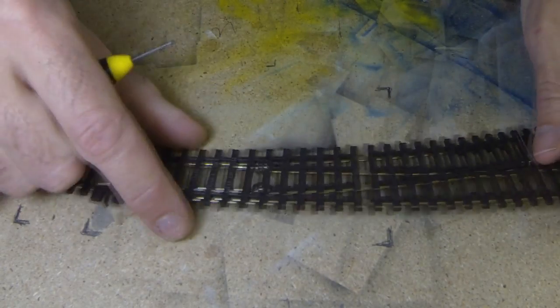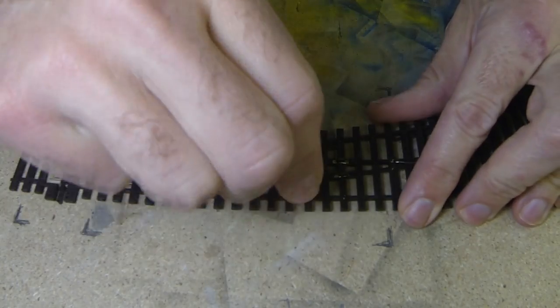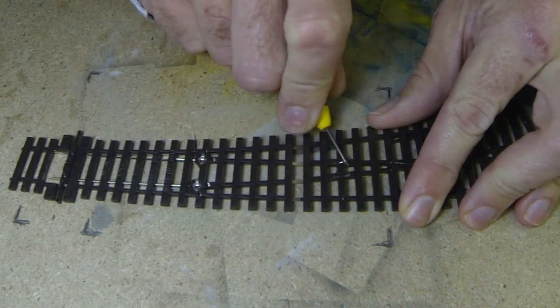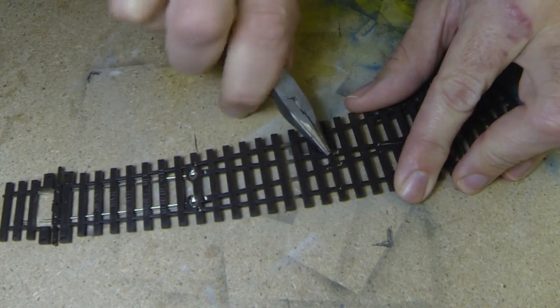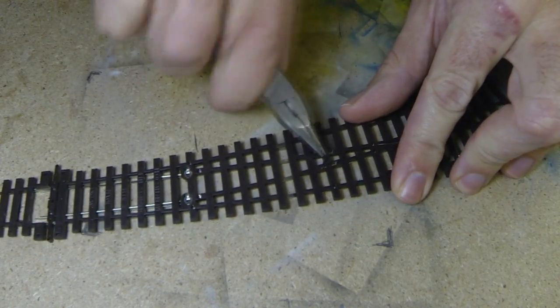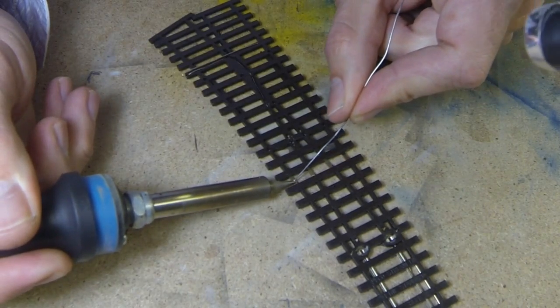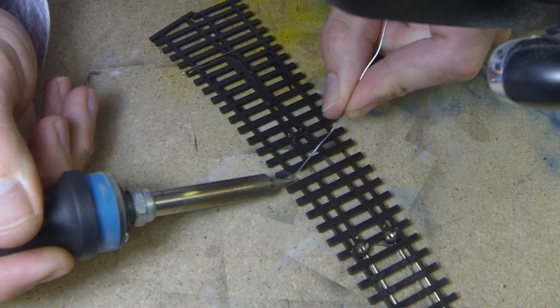Now we can move on to the electrics. The first thing we need to do is to remove the wires that connect the switchblades to the frog. I use a small screwdriver to break the connections and then pull the little wires out. Next, we need to connect the switchblades to the stock rails. To do this, turn over the turnout and tin the rails in the gaps left in the sleepers.